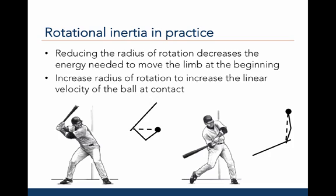Let's see what this means in practice. If we reduce the radius of rotation, we will reduce the amount of muscle force or energy needed to move the limb around the joint at the beginning of the movement. The figure on the left and the cartoon next to it depict the starting point of a baseball swing. As you can see, the elbows are bent, which decreases the effective radius of rotation, so it will take less energy or muscle force to begin rotating the arm and bat around the shoulder joint. If we increase the radius of rotation at the end of the swing — or importantly, at the point of contact — by straightening out the arms, we can increase the linear velocity of the ball off the bat. As shown in the figure on the right and the corresponding cartoon, the effective radius of rotation is bigger at the end of the movement.